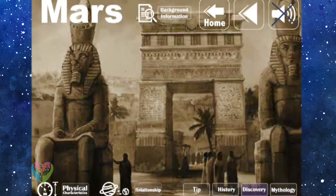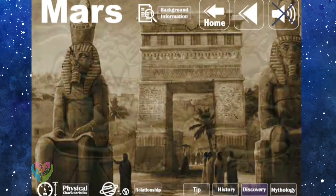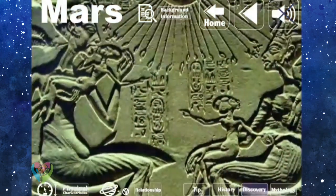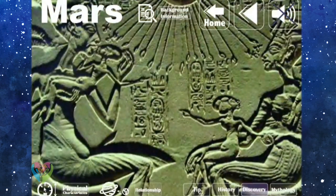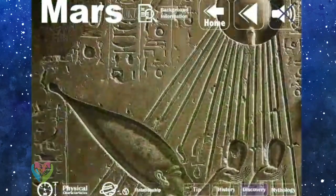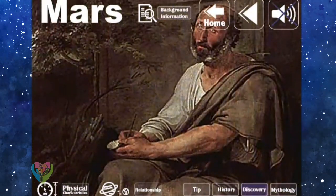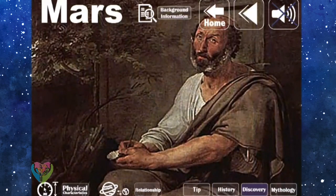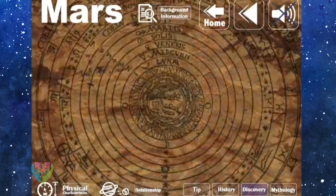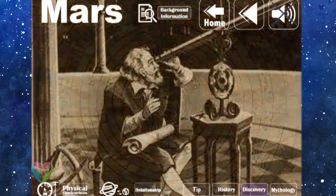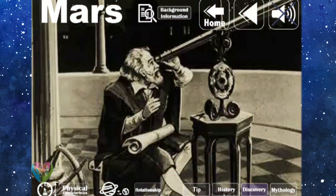In 1554 BC, the ancient astronomers recorded about Mars. And in the 4th century BC, Aristotle noticed that Mars disappeared behind the moon, which indicates that Mars is far away. In 1610, Galileo Galilei was the first person who looked at Mars through a telescope.